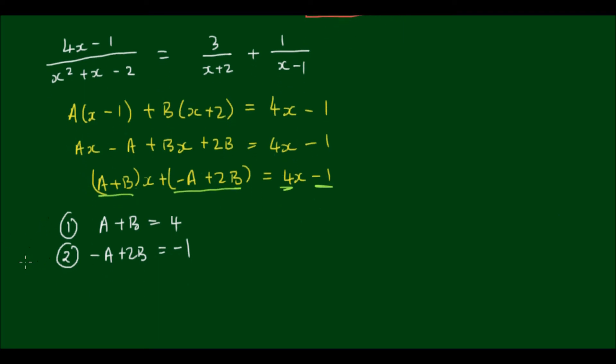So if I add equations 1 and 2, A plus negative A is 0, and B plus 2B gives me positive 3B, and 4 plus negative 1 gives me 3.